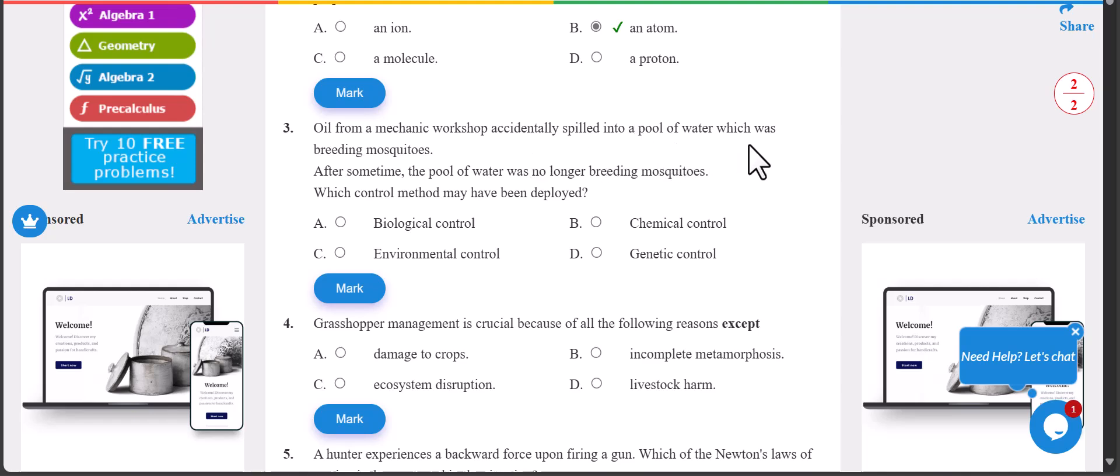Number three: oil from a mechanic workshop accidentally spilled into a pool of water which was breeding mosquitoes. After some time the pool was no longer breeding mosquitoes. Which control method may have been deployed? The answer is B, chemical control - they had put some chemicals into the pool killing all the animals.